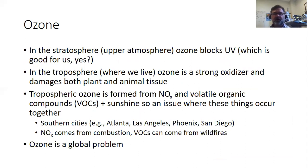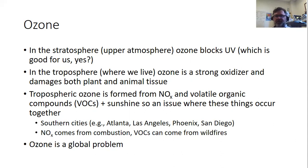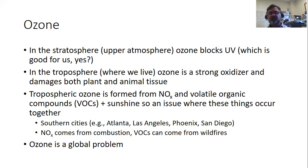Ozone is both bad and good. In the stratosphere — the upper atmosphere — it's a good thing: it blocks UV, which is mutagenic, causing cancer and skin burns. So blocking a lot of UV is very useful. In the troposphere, where we live, ozone is a strong oxidizer, which is bad because it damages tissue — it can irritate lungs and damage plant tissue. Right now it's an underappreciated form of pollution for plants and agriculture.